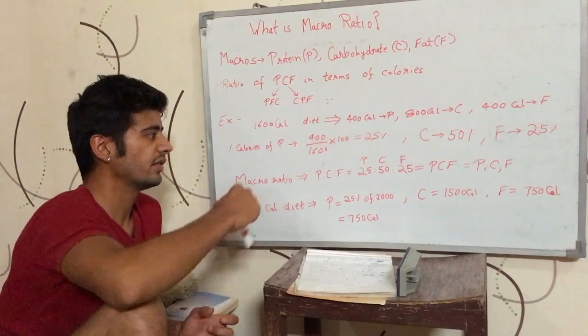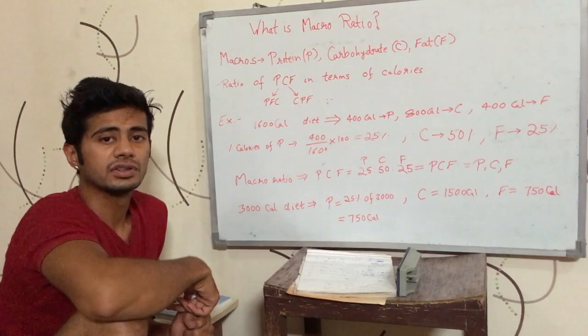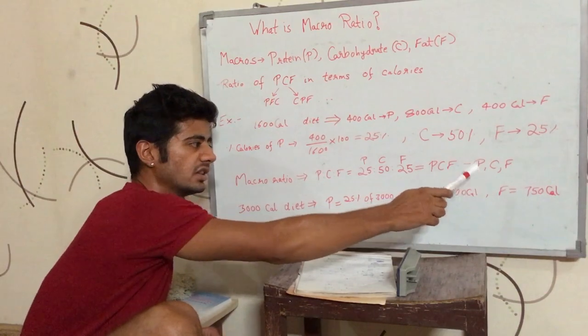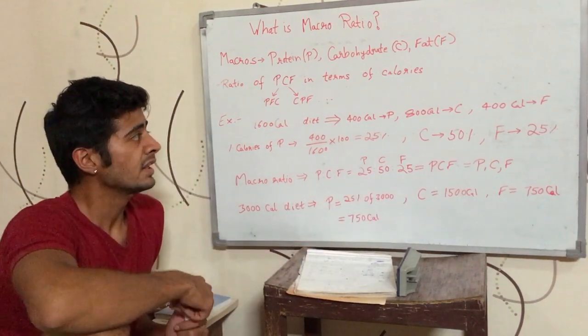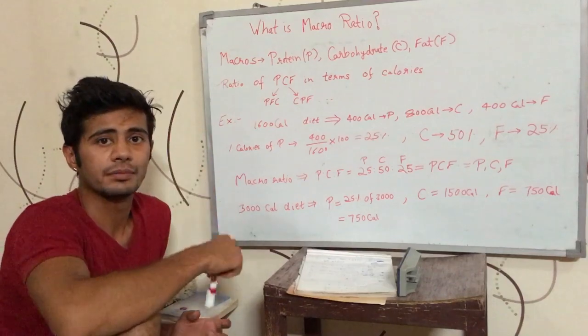So a diet with 25, 50, 25 PCF ratio having 3000 calories would have 750 calories coming from protein, 1500 calories coming from carbohydrates and 750 calories coming from fat. That is how we calculate the macro ratio.